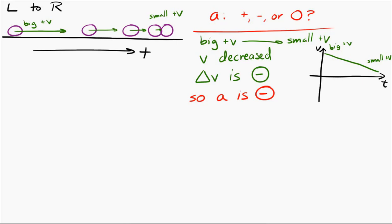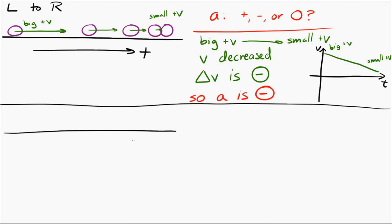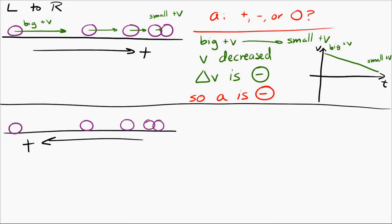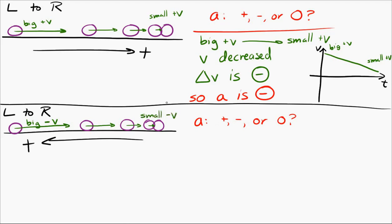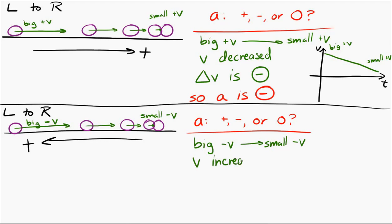Now let's change it around. Let's say positive is to the left — the ball is still moving from left to right, but positive is now to the left. The ball starts out moving in a negative direction with a pretty big velocity — a big negative velocity. Then later the velocity is smaller but still negative. So we go from a big negative velocity to a small negative velocity, which means it changed in a positive sense.